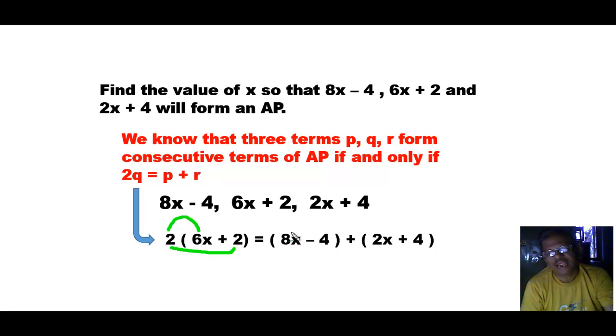And here you will add the two brackets. Adding the like terms, 8x plus 2x is 10x, and minus 4 and plus 4 will be cancelled out. Therefore, we will get 12x plus 4 equals 10x.